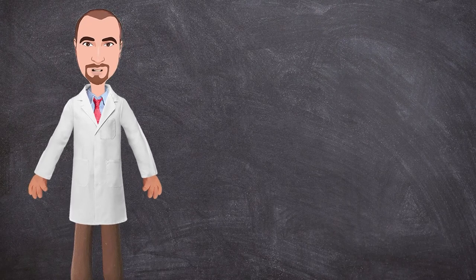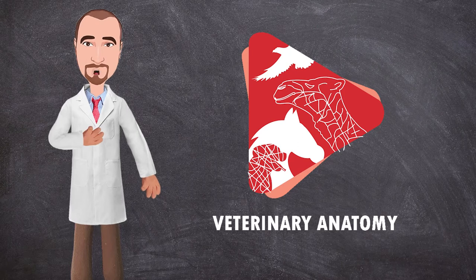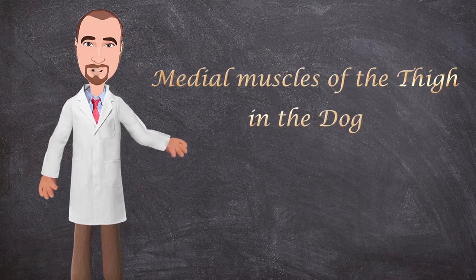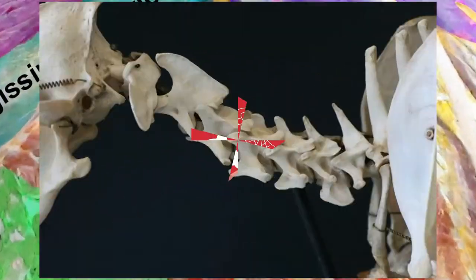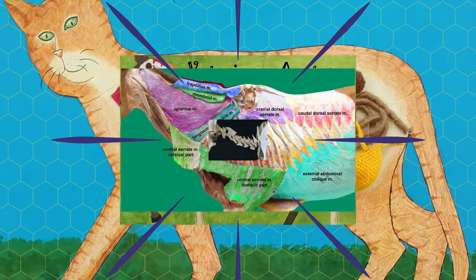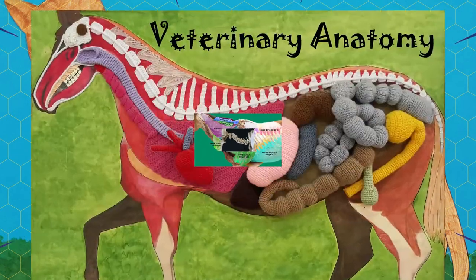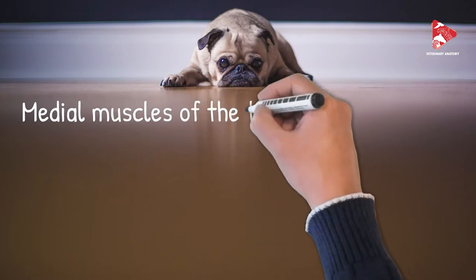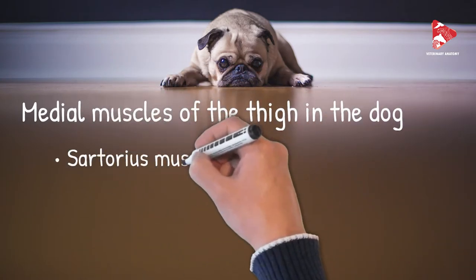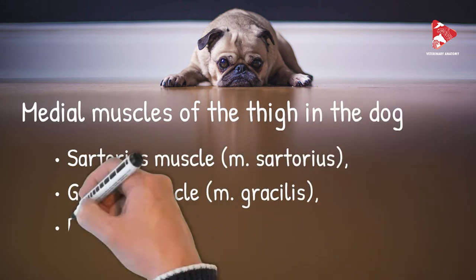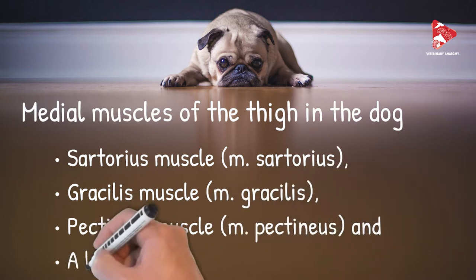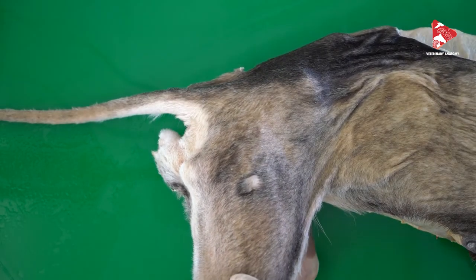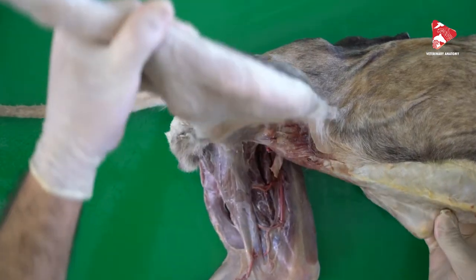Hello everyone, welcome to another anatomy video. This is Dr. Ayan from the Veterinary Anatomy channel. Today we will talk about the medial muscles of the thigh in the dog. The medial muscles of the thigh in the dog include the sartorius muscle, the gracilis muscle, the pectineus muscle, and finally the adductor magnus muscle.